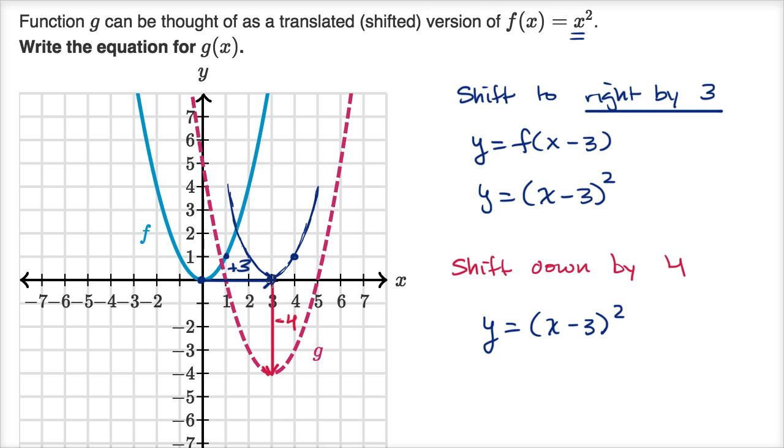But now whatever y value we were getting, we want to get four less than that. So when x equals three, instead of getting y equals zero, we want to get y equals four less or negative four. When x equals four, instead of getting one, we want to get y is equal to negative three.